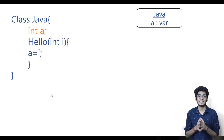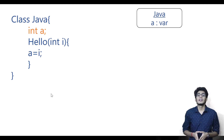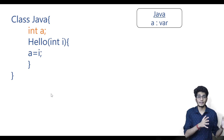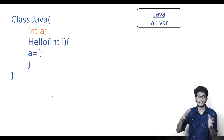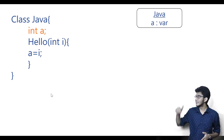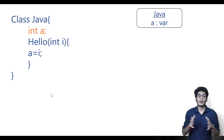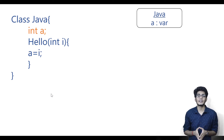This is how you have to declare the instance variable. First, keep in mind that you have to declare the instance variable outside of any method, outside of any constructor, and outside of any block. This is how you declare an instance variable.